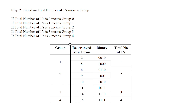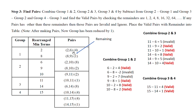Step 2: based on the total number of 1s, form groups. Group 1 contains minterms with one 1, group 2 contains minterms with two 1s, group 3 contains minterms with three 1s, and group 4 contains minterms with four 1s. Rearrange the minterms accordingly by comparing with the previous table.